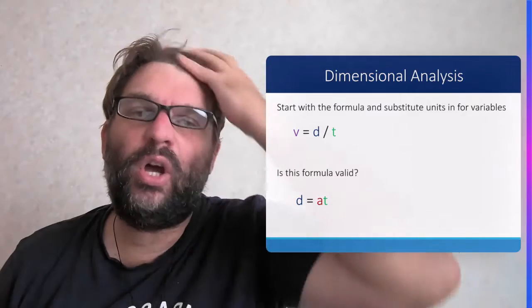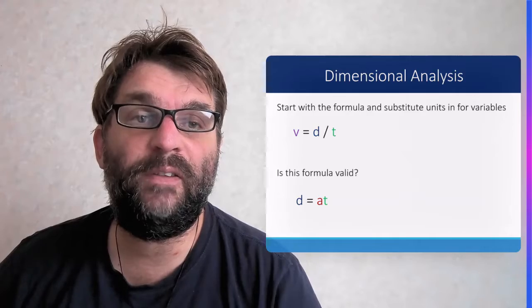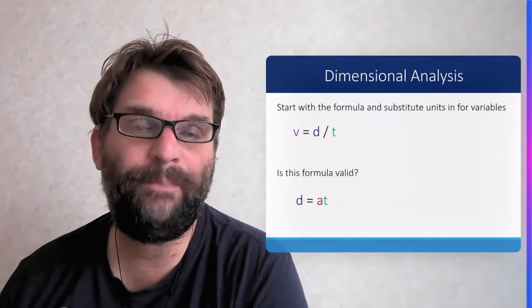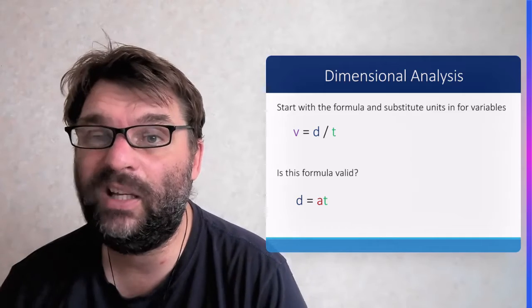So here's an example. Dimensional analysis: you start with a formula and then substitute the units into the variables. Let's begin with the top one. Velocity equals distance over time, so let's try and work out the units for distance over time and make sure that equation is the correct one.